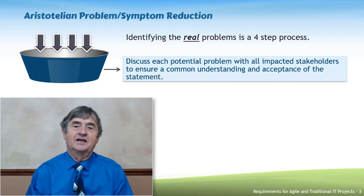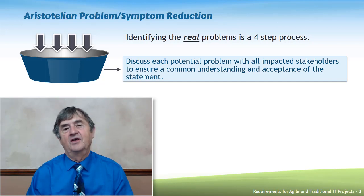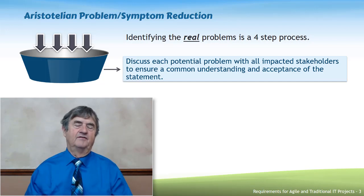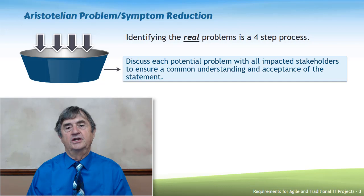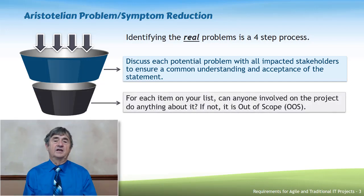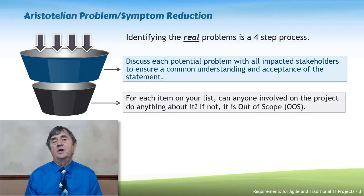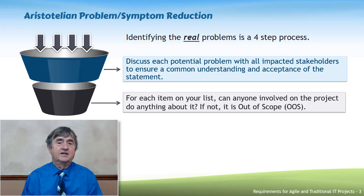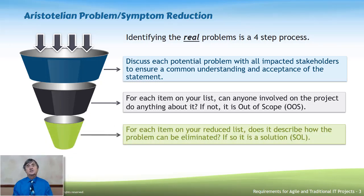It's about looking at the list of problems and making sure stakeholders agree the problem is worth solving and they understand what it is. The first question to ask: if it is a real problem, can your project team do anything about it — do you have the authority and resources to address it? If not, declare it out of scope.